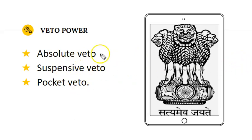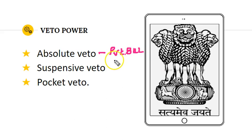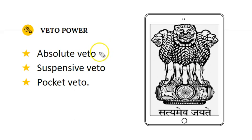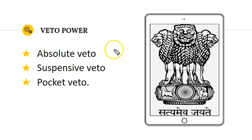Absolute veto means the President does not take any action on a bill passed by Parliament. He generally exercises this in two situations: first, if the bill is passed by a private member, he may withhold his decision for the betterment of the country. Second, if a bill passed by Parliament is awaiting Presidential assent and the Cabinet resigns and the new government asks the President not to give assent, the President will take no action on that bill. This is called Absolute veto.